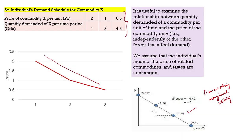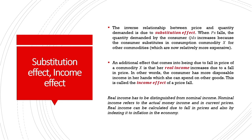On the negatively sloped demand curve, price is on the y-axis and quantity demanded on the x-axis. As the price of a commodity declines, the consumer wants to demand more. The substitution effect is estimated based upon the relative price of other goods and services the consumer is consuming, or whether the price of the commodity the consumer is consuming is increasing or decreasing.